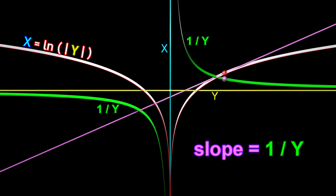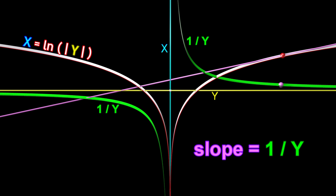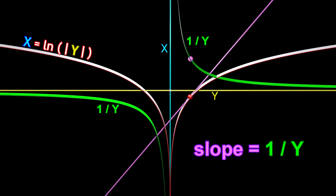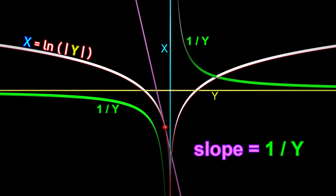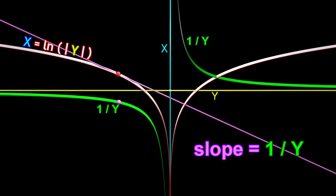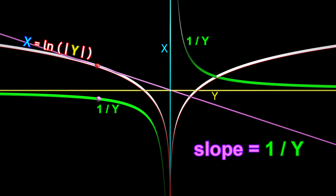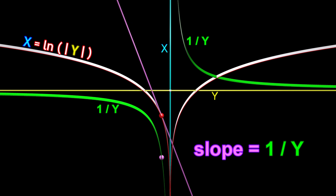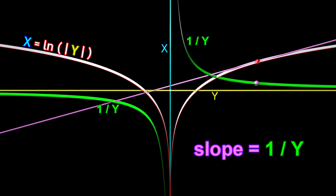If the height of the purple sphere approaches zero, the slope of the purple line approaches zero. If the height of the purple sphere is a large positive number, the slope of the purple line is a large positive number. If the height of the purple sphere is a large negative number, the slope of the purple line is a large negative number. The height of the purple sphere is again always exactly equal to the slope of the purple line.